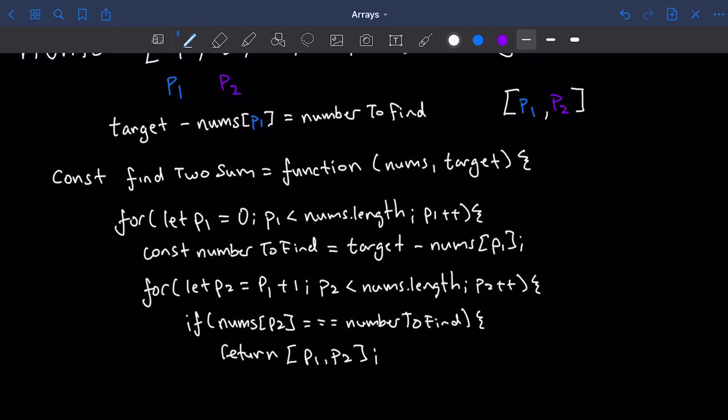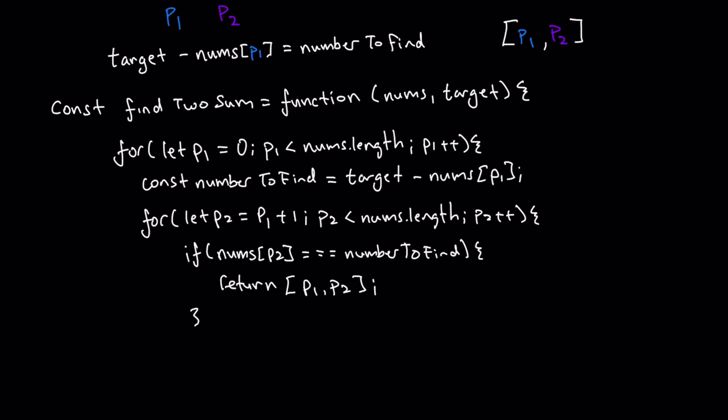Now we have to make sure to close our if braces, and then we say what happens if nums at p2 does not equal number to find. Well, we actually don't want anything to happen. We just want our for loop to continue because we found that this p2 doesn't work. Let's just keep going. So we're just going to leave it as it is, and we're just going to close our for loop.